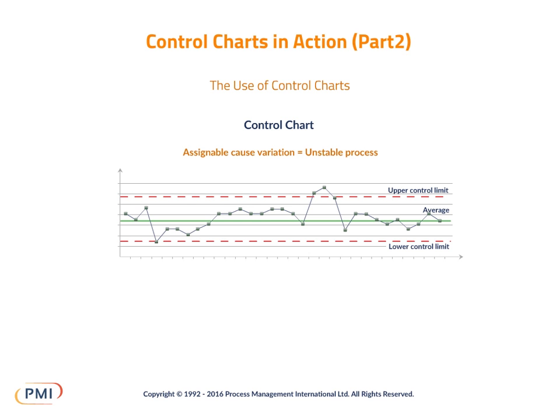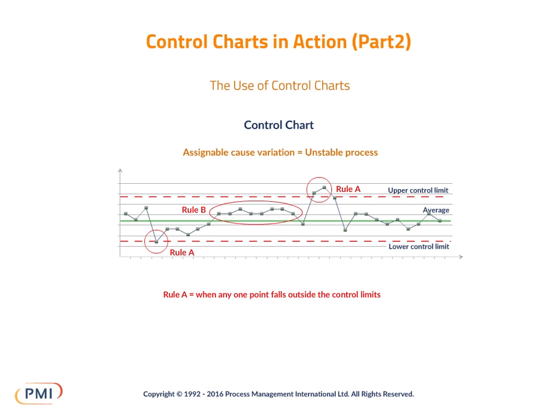There are two fundamental rules that signal when variation may be due to an assignable cause. First, when any one point falls outside the upper or lower control limits — this is Rule A. Second, when there is a run of eight or more points in a row that fall on one side of the average line — this is Rule B.